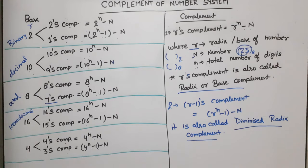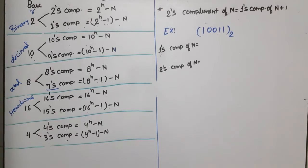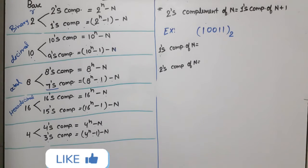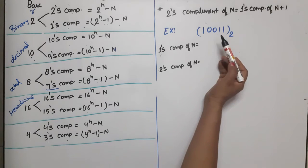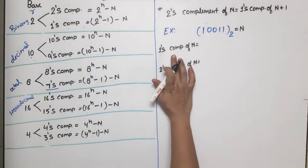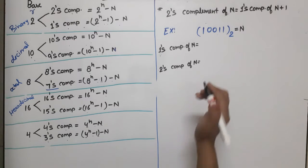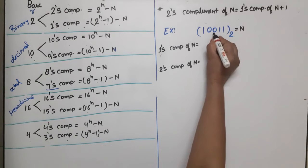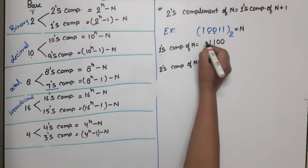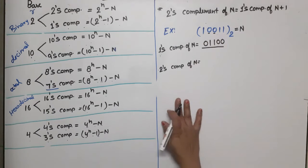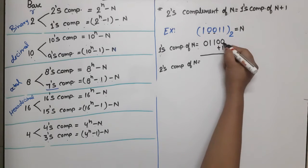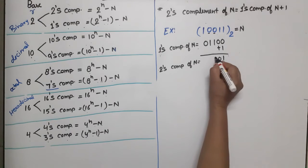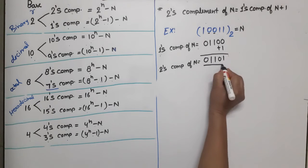I will show you an easy way to find complements. For binary (base 2), we can find 1's complement and 2's complement. The formula is: 2's complement of N = 1's complement of N plus 1. For 1's complement, just flip each bit — 1 becomes 0, 0 becomes 1. Then for 2's complement, add 1 to the LSB of the 1's complement result.